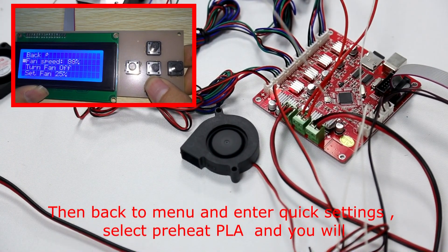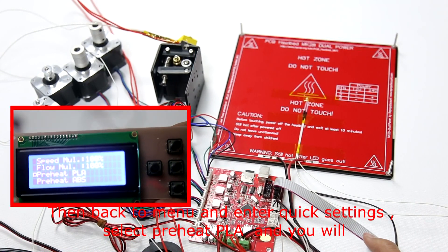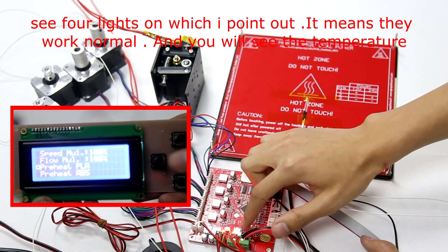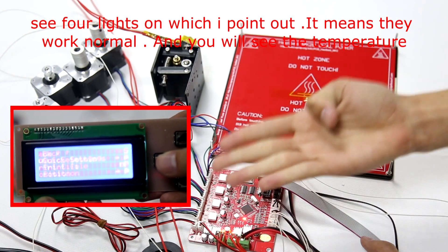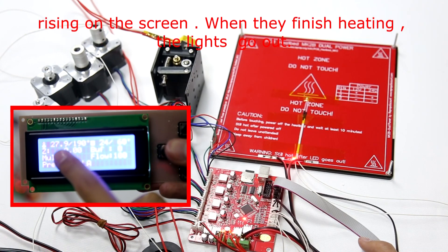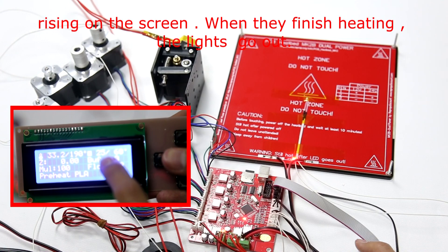Then, back to menu and enter quick settings. Select preheat PLA and you will see four lights on which I point out. It means they work normal. And you will see the temperature rising on the screen. When they finish heating, the light goes out.